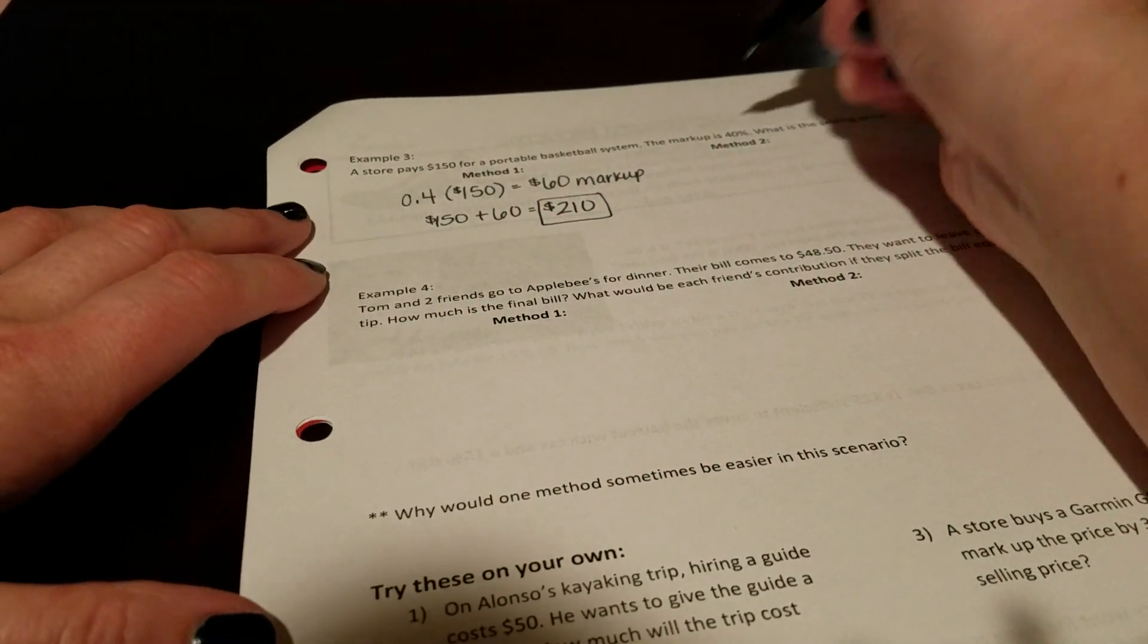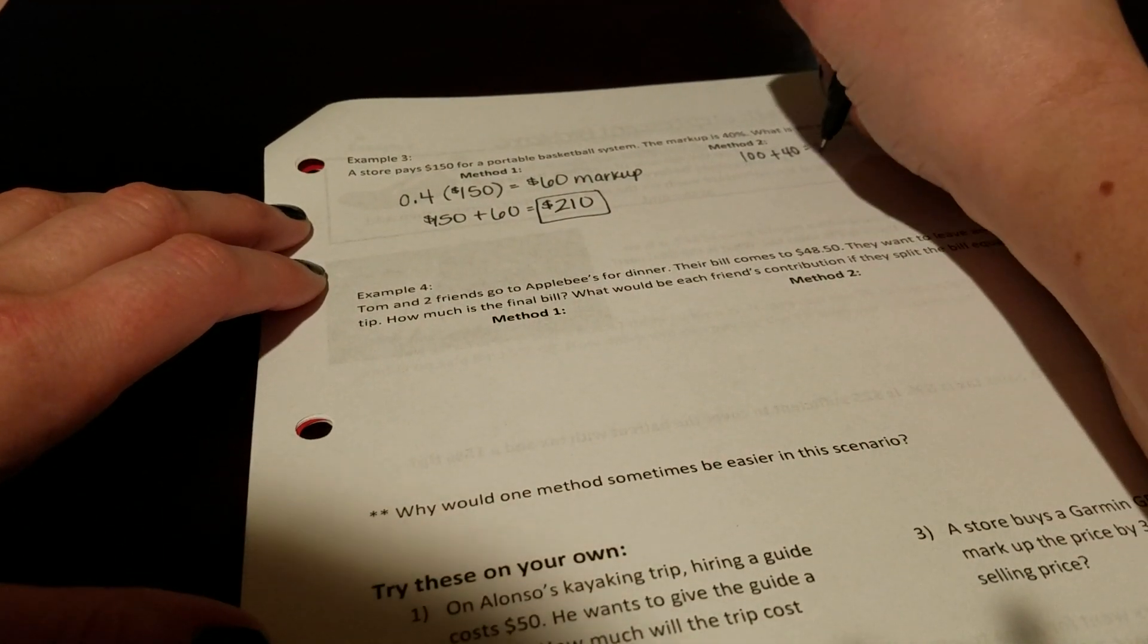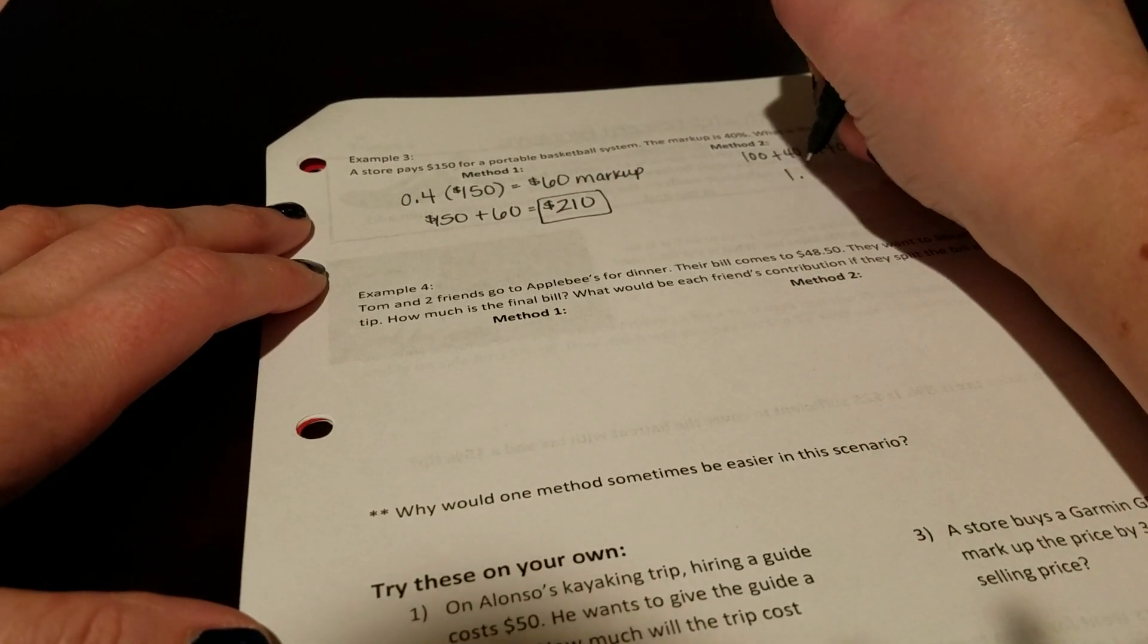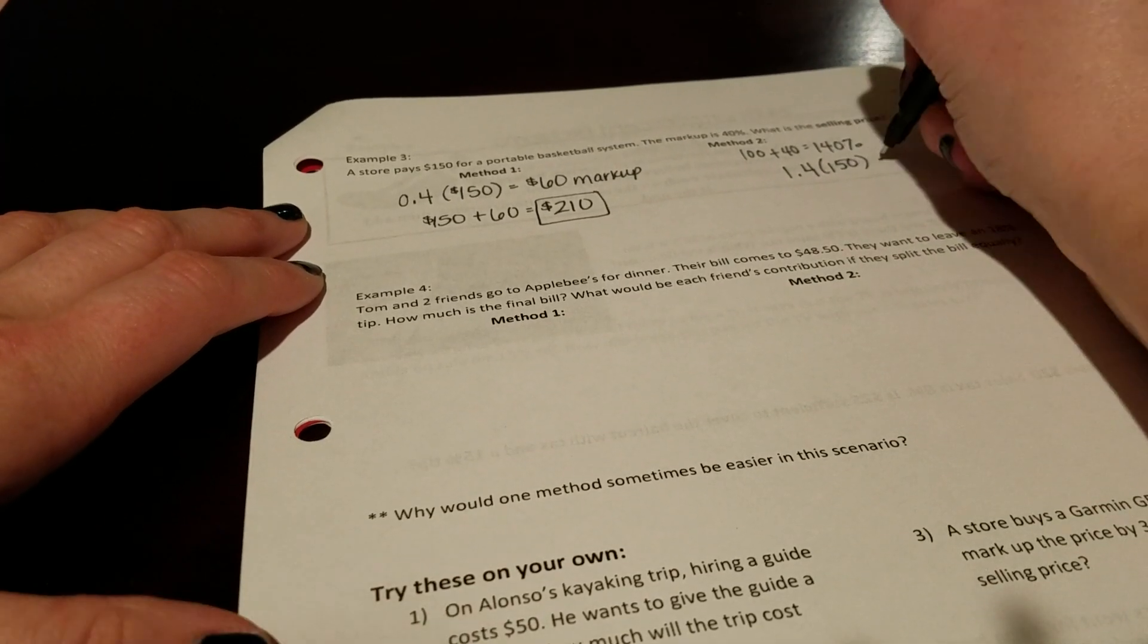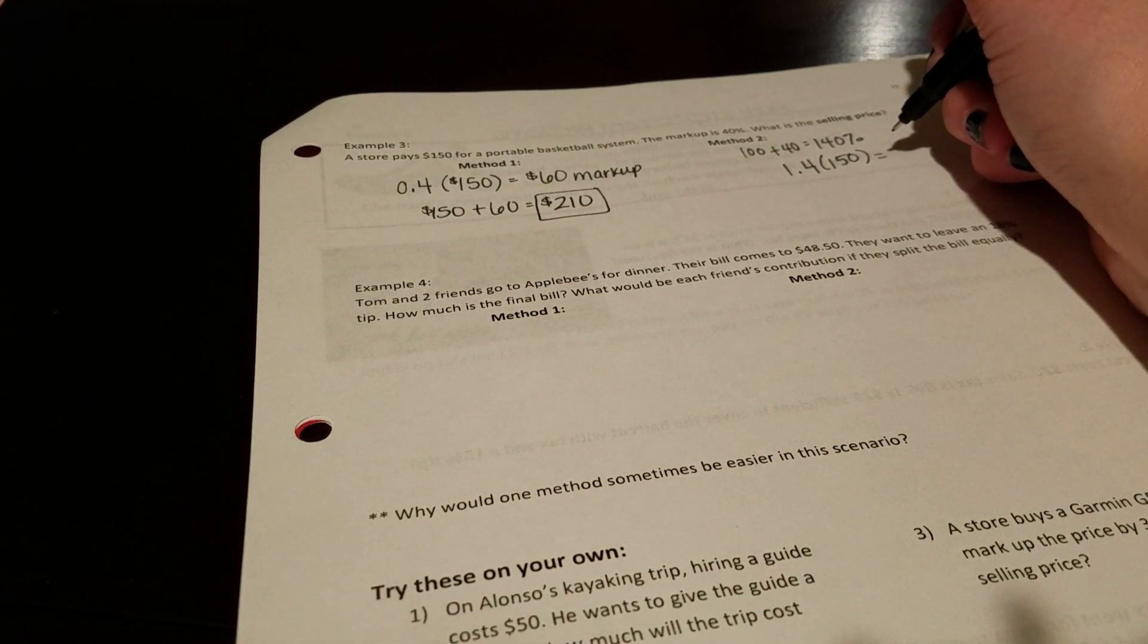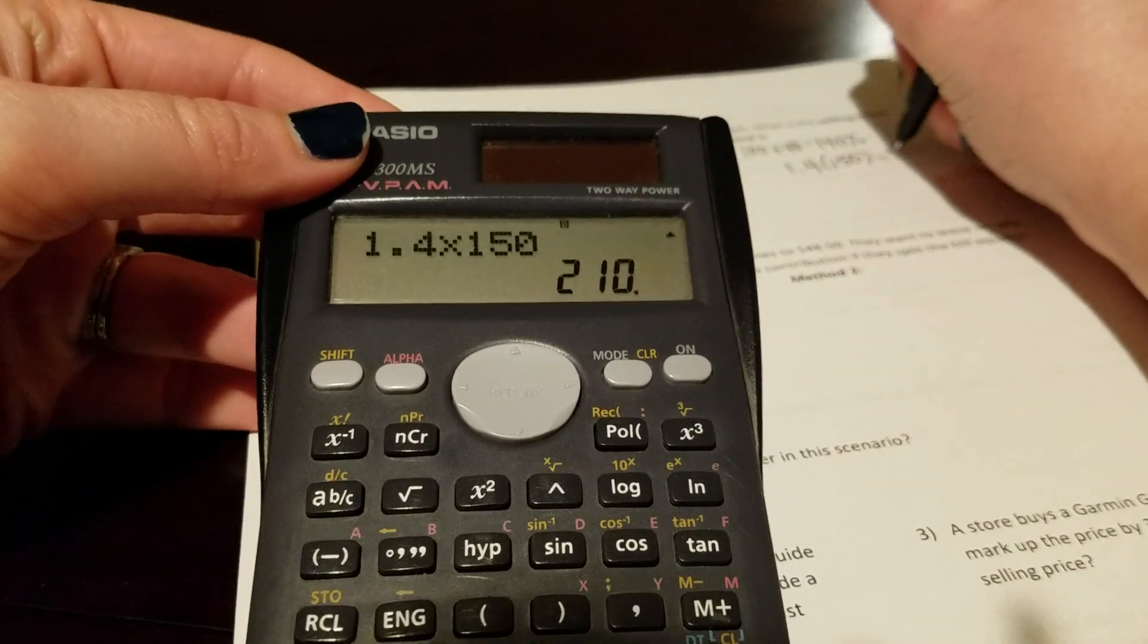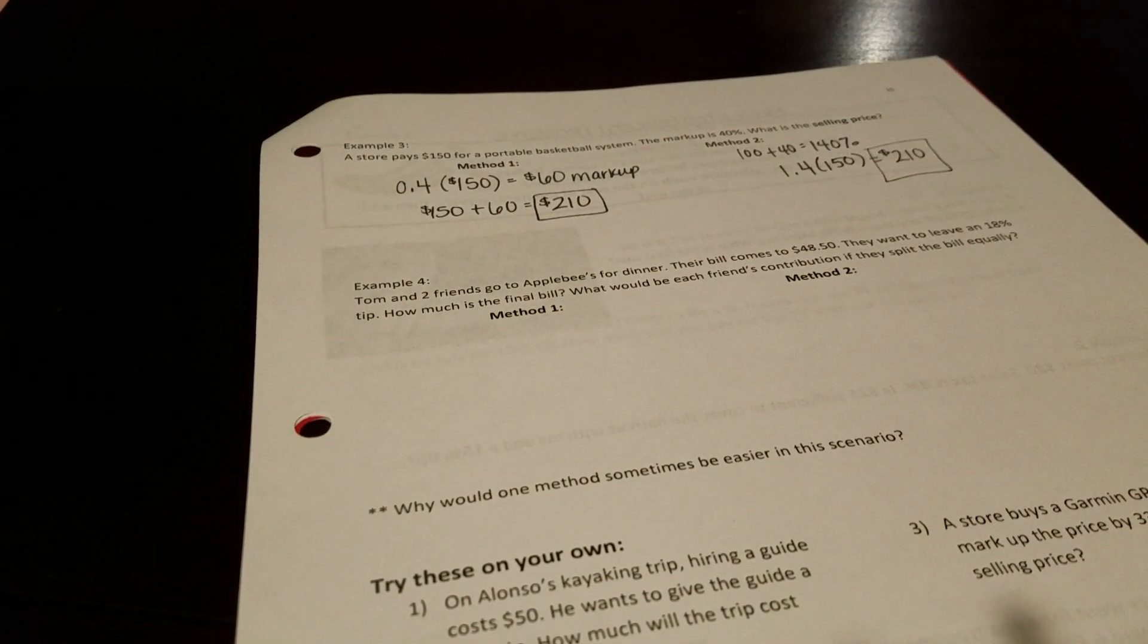Then if I use method two, 100% plus 40% is going to give me 140%, which would translate to 1.4 as a decimal times $150. And again, just to prove that these are the same, there's that calculation as well. So your selling price with method two is also $210.